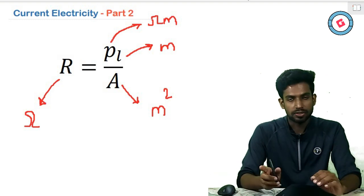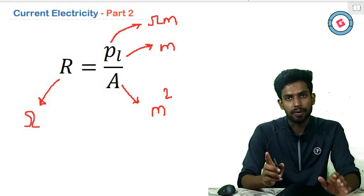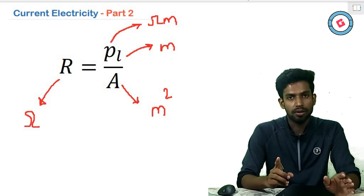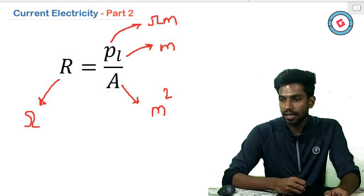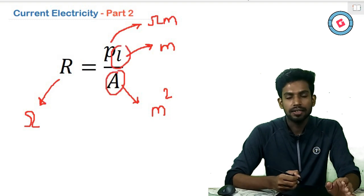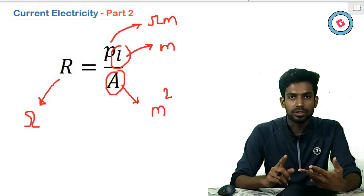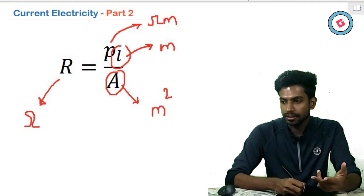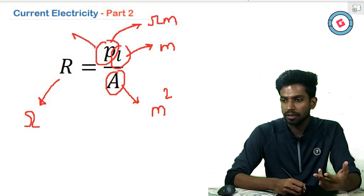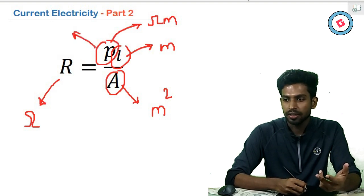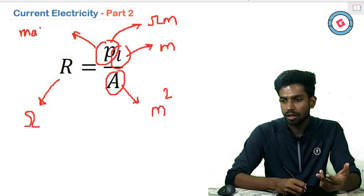As discussed before, there are four factors for electrical resistance: L, A, temperature, and material. The other two factors — temperature and material — are included in rho (ρ). So rho depends on the material and temperature.